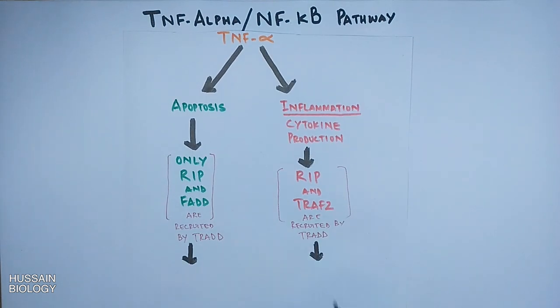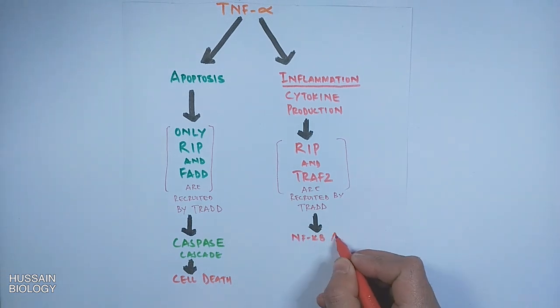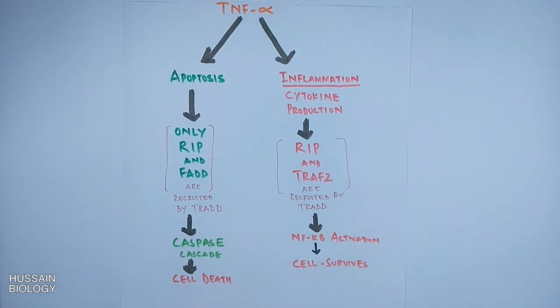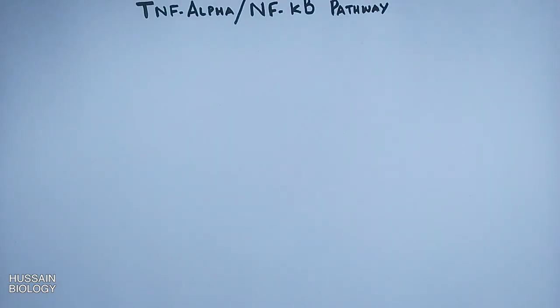Furthermore, RIP and FADD start the caspase cascade which induces cell death in the apoptosis pathway. While on the right, RIP and TRAF2 activate the NF-κB pathway with which the cell survives. Now let's see in detail how this NF-κB pathway is driven and how apoptosis is inhibited in that process.